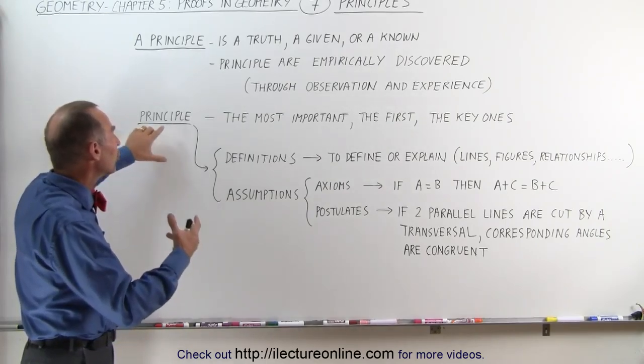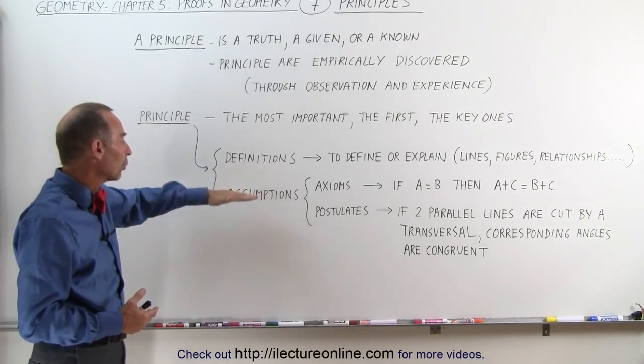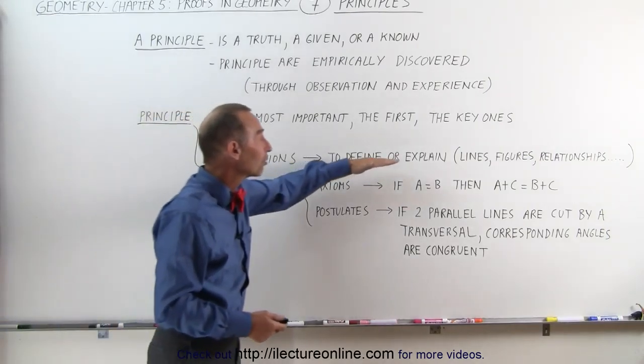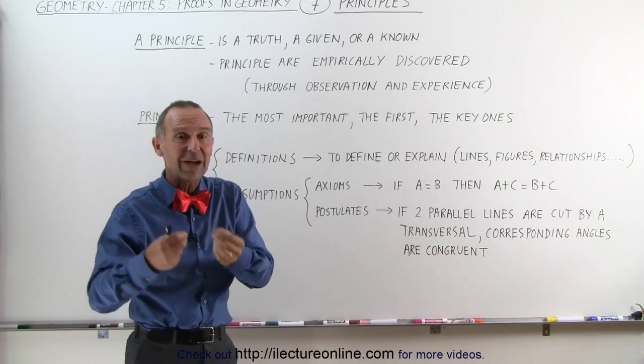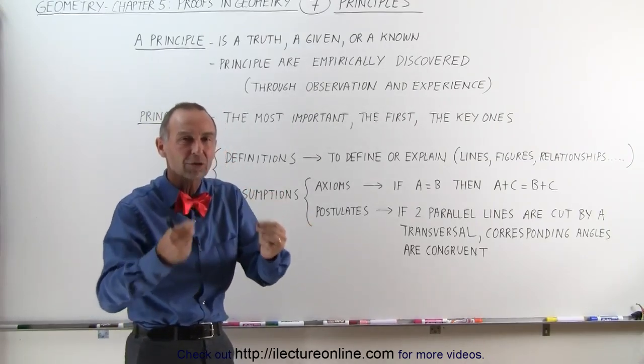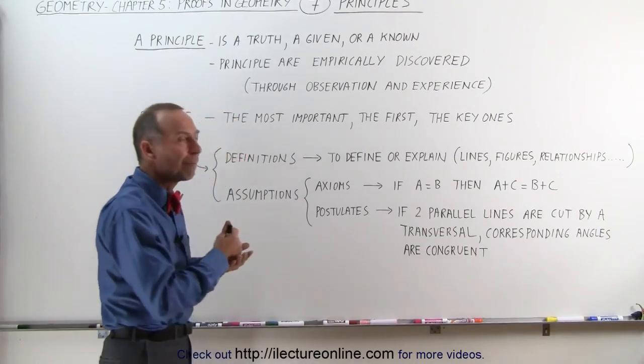Principles are divided into two different things. One called definitions and the other one called assumptions. Definitions simply define or explain particular things. They define what a line is, what a figure is, what a relationship is between the parts of a figure. That's done by definition.